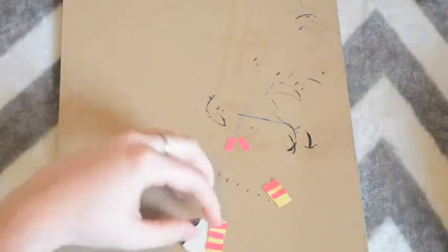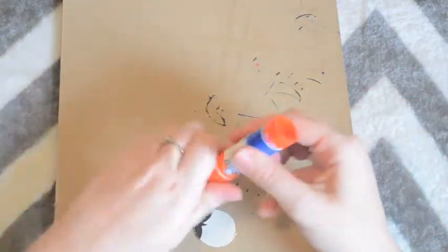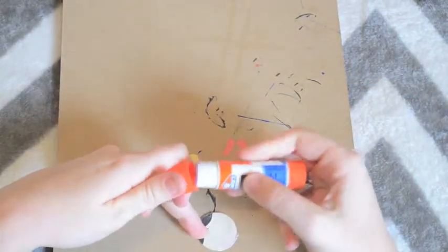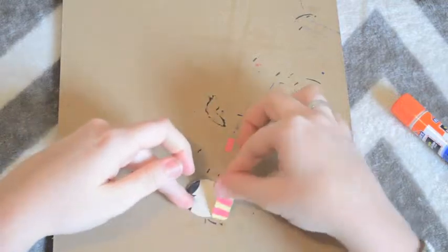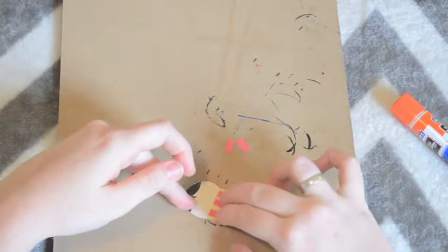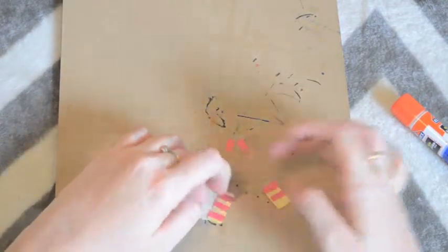Once you are finished with the scarf, go ahead and glue it on. You're going to take the longer part and glue it right on the bottom of the head, and then take the smaller piece and glue it onto the back. You'll see here in a second how I do it.